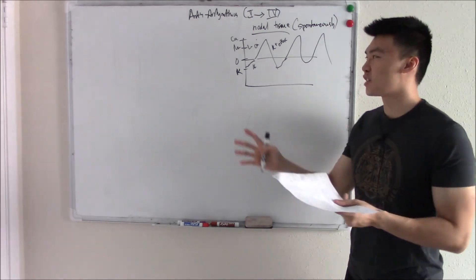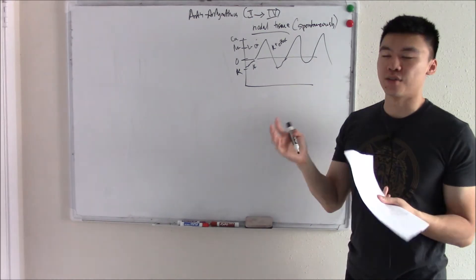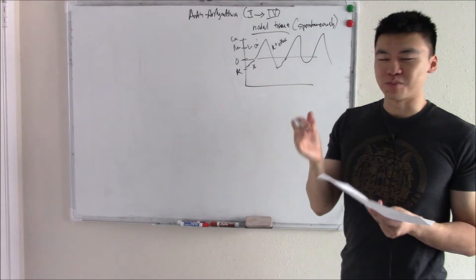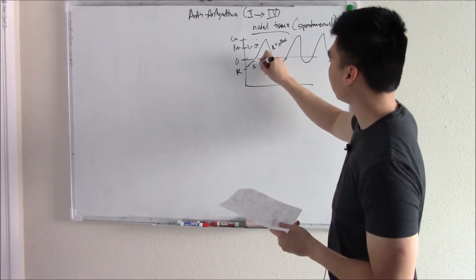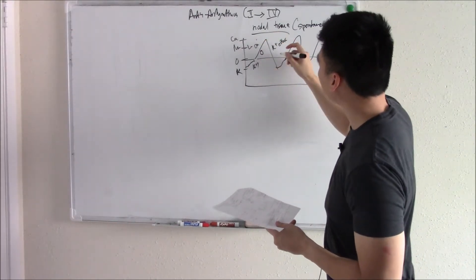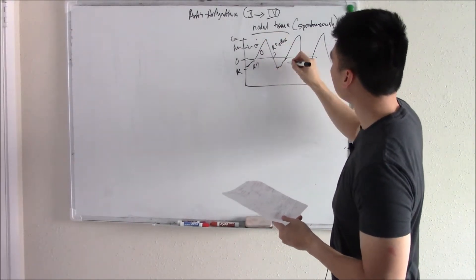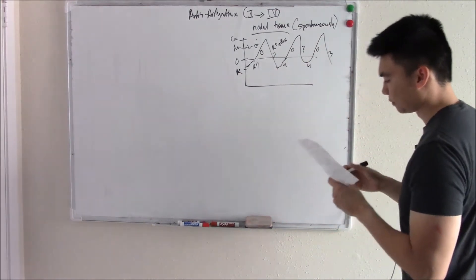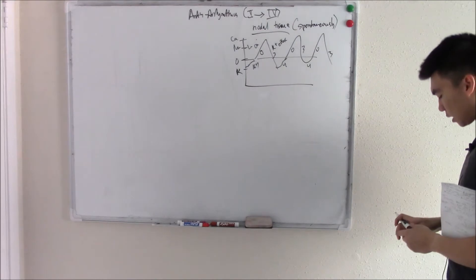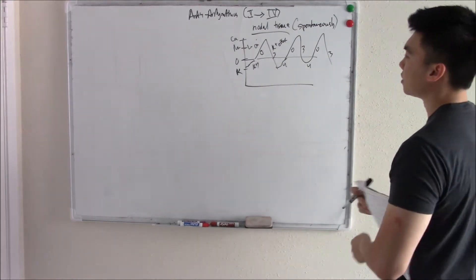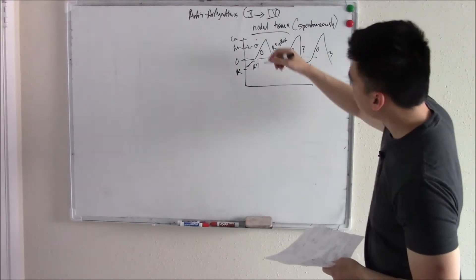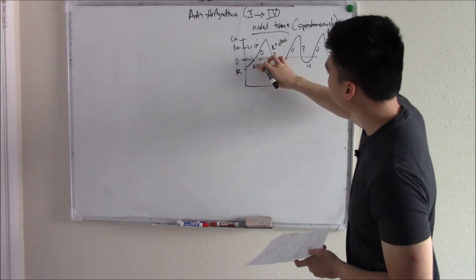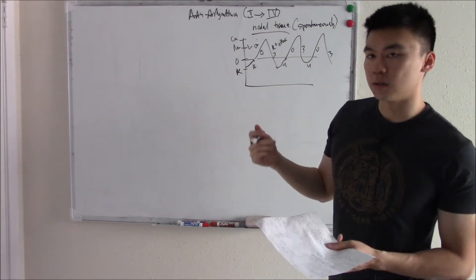Hopefully you drew that out and remember — it's nothing new. The phases were: phase four, phase zero, phase three — cycling repeatedly. Some new information: this slope caused by your leaky funny sodium channels is very important. You can imagine if the slope is very high, it'll be easy to depolarize very quickly.